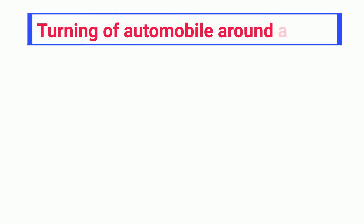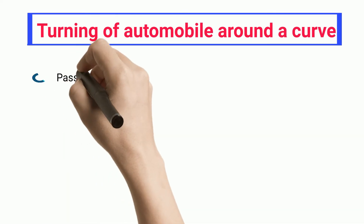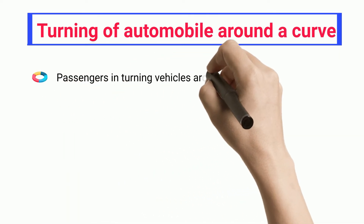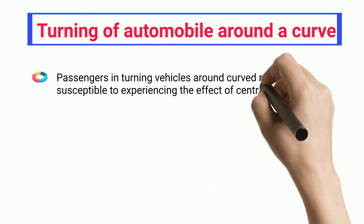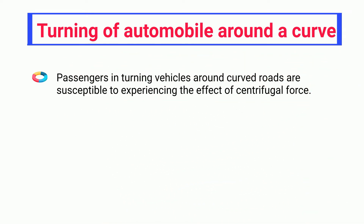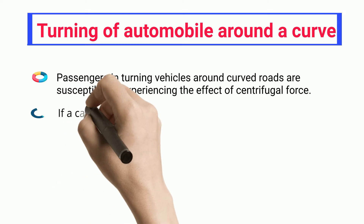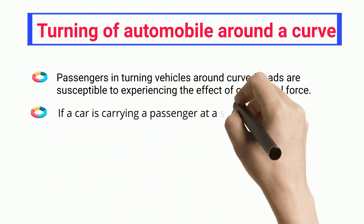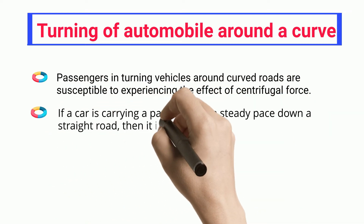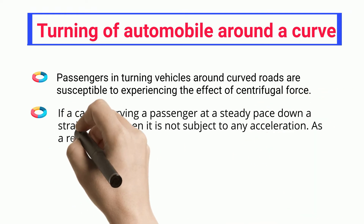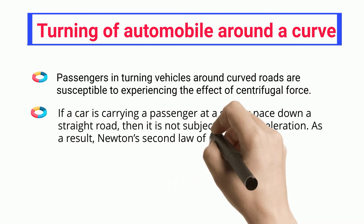Passengers and vehicles turning around curved roads are susceptible to experiencing the effect of centrifugal force. If a car is carrying a passenger at a steady pace down a straight road, then it is not subject to any acceleration.